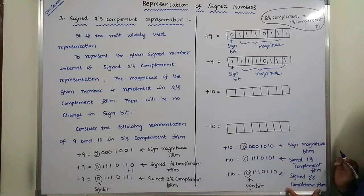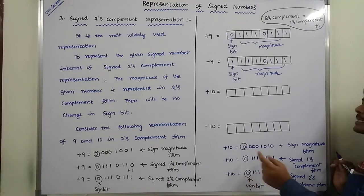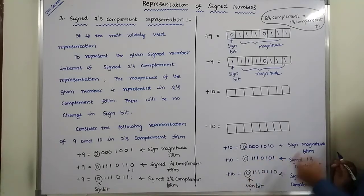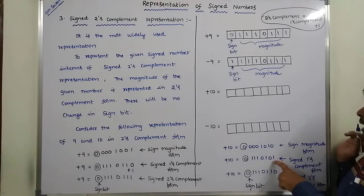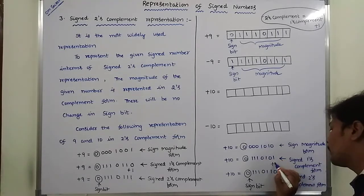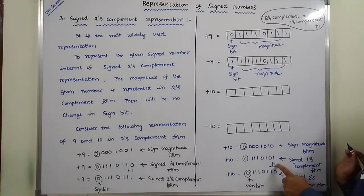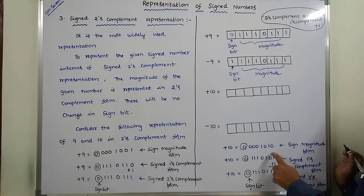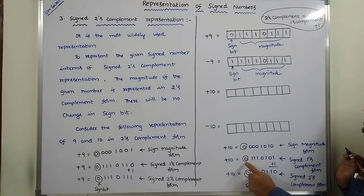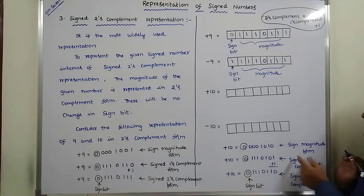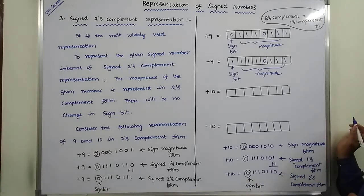The signed two's complement representation of plus 10 is obtained by adding 1 to the signed one's complement representation at the LSB position. At the LSB position, 1 plus 1 gives 0 with carry 1. Then 0 plus carry 1 gives 1. The remaining bits stay the same, and there is no change in the sign bit. So the magnitude in one's complement plus 1 gives the signed two's complement representation.